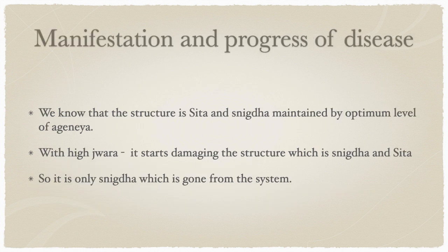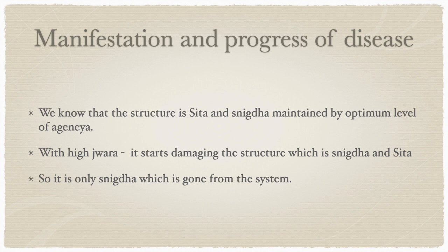The structure is shita and snigtha, maintained by an optimum level of agni. With high jvara it starts damaging this shita-snigtha structure. When we say jvara, we don't necessarily mean fever with temperature — you may not have a temperature but might have a localized or systemic jvara. Many patients say they feel feverish even though they have no fever and their appetite is normal — that is jvara. When this continues, there is a depletion of snigtha in the body, and as snigtha depletes, vata increases because ruksha increases.